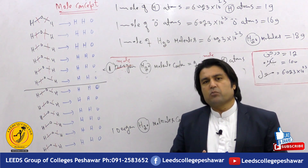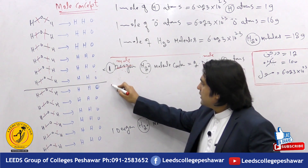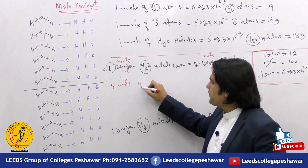For example, we have 5 mole of hydrogen. We have 5 mole of hydrogen.